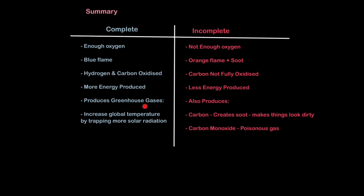Complete combustion produces greenhouse gases, which can increase global temperature by trapping more solar radiation. And incomplete combustion can do that, but also produce carbon, which creates soot, which makes things look dirty. And it can also produce the lethal gas, carbon monoxide. It's colorless, it's odorless, and it basically stops you from transporting oxygen to your cells so you can live.